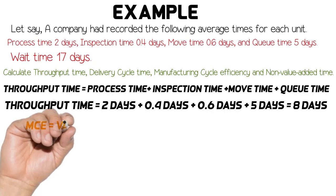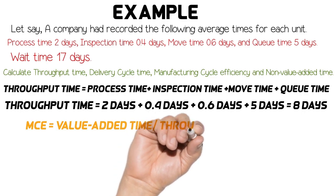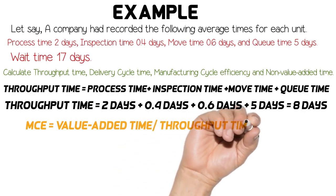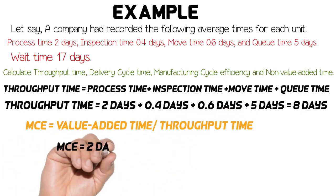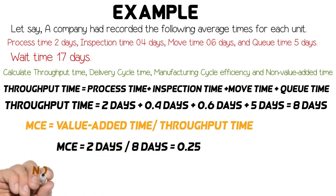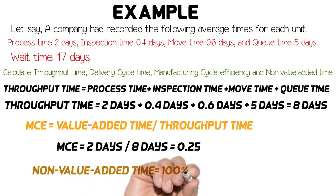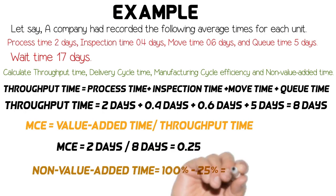Now we will calculate manufacturing cycle efficiency. Manufacturing cycle efficiency equals value-added time over throughput time. Here, only process time is value-added time. So we divide process time 2 days by 8 days throughput time and get 0.25 manufacturing cycle efficiency. For non-value-added time, we subtract 25% from 100% and get 75% non-value-added time.